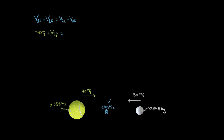That should equal the initial velocity of the second object, our golf ball. The initial velocity of the golf ball is not 50, it's negative 50. You've got to be careful — these are velocities in this formula, so if you've got a velocity directed in the negative direction, you better make it negative. These are vector values, you've got to plug them in with the proper sign. So the initial velocity of the golf ball is negative 50 meters per second, because we're assuming leftward is negative and rightward is positive.